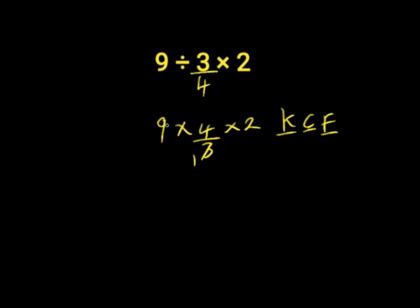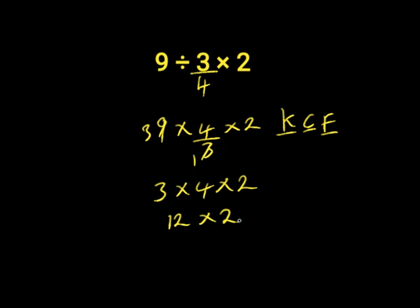3 into 9 gives 1; 3 into 3 gives 3. We are left with 3 times 4 times 2. 3 times 4 will give us 12. Then 12 times 2 is 24. 24 is the right answer to this question.